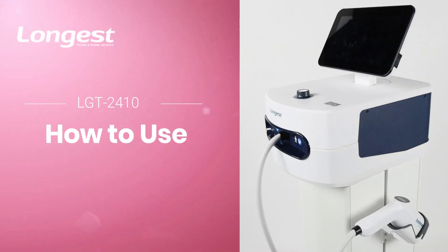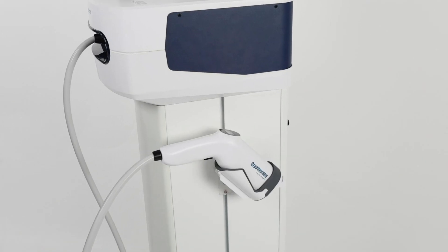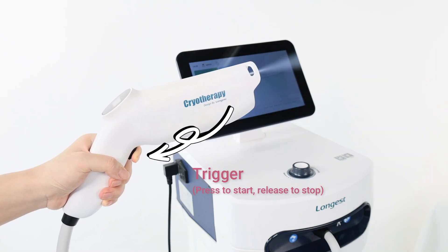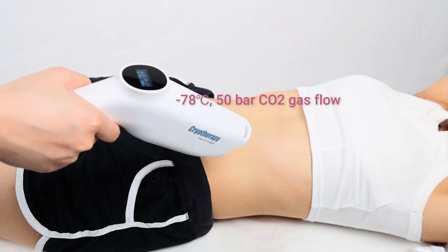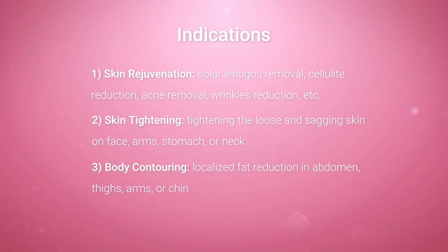In this video, we will guide you through the basic steps of using our new localized cryotherapy device LGT2410S. The device delivers minus 78 degrees Celsius carbon dioxide flow at a pressure of 50 bar through an applicator to specific areas of the body. While localized cryotherapy is commonly used in sports medicine to treat acute injuries, it is also increasingly popular in dermatology and aesthetic medicine to address skin conditions and improve the appearance of skin.